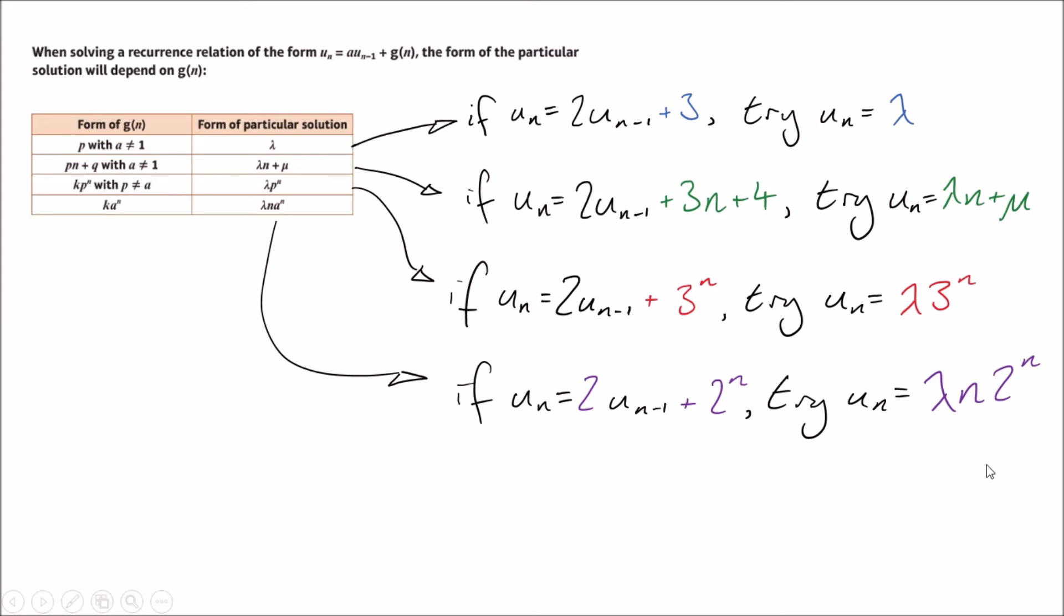Now, here's the danger one. If it's something to the power of n and that something is the same as what's in front of the term here, then we need to shove an n in there. We'll get used to that a little bit more when doing second-order recurrence relations. It seems when there's a danger one and it doesn't work, we shove an n in there. That's something to remember.